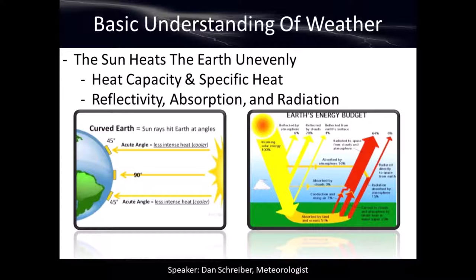The heating at any given point on the earth is going to be different at any given time. On a hot, sunny day, you touch your car parked outside and it's going to be pretty hot — it may even burn you. Then you go into the grass or jump in a swimming pool, and it's much cooler. Everything on earth is like that: heated differently, at different times and at different degrees and in different capacities.